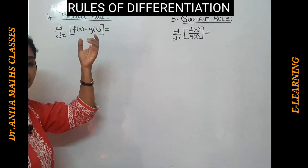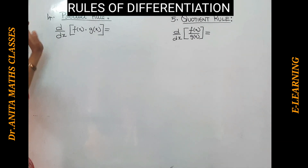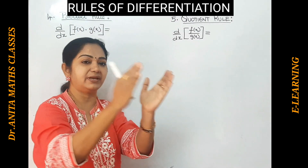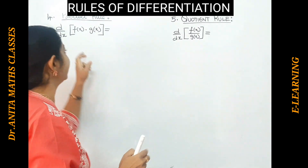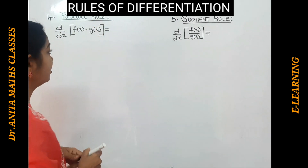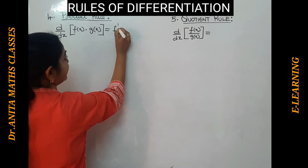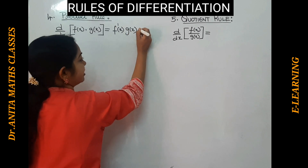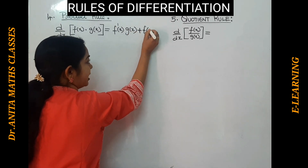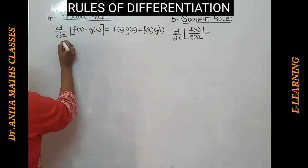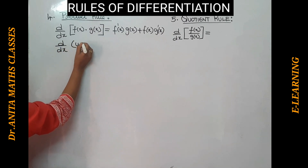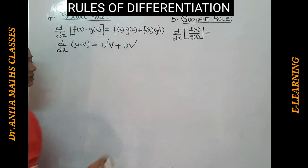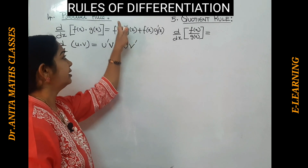Now the product rule — the fourth rule. The derivative of the product of two functions u and v is not simply u′ times v′. That is wrong. The product rule states: the first function's derivative multiplied by the second function as it is, plus the first function as it is multiplied by the derivative of the second function. In short: u′v + uv′.